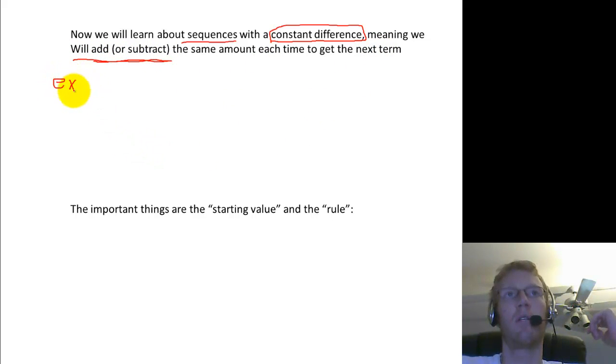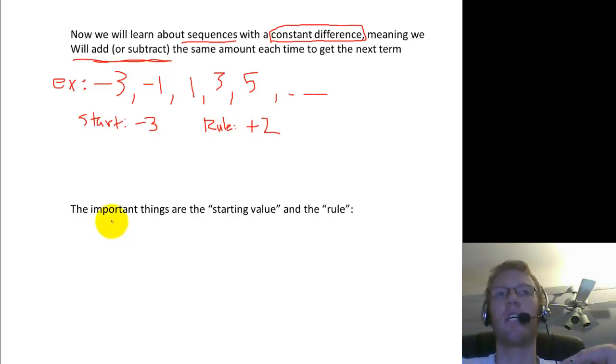So let me give you an example of a very simple one. Let's start with like negative 3, negative 1, 1, 3, 5, etc. So you can see right away the starting value is negative 3, and the rule, I hope you can see, is plus 2. So any sequence like this, the important two things are writing down the starting value and writing down the rule. The rule is the amount you add each time, the starting value is the starting value. So I'll even write this in. The amount added each time. And it could be subtracted. Subtracting is the same as adding a negative.